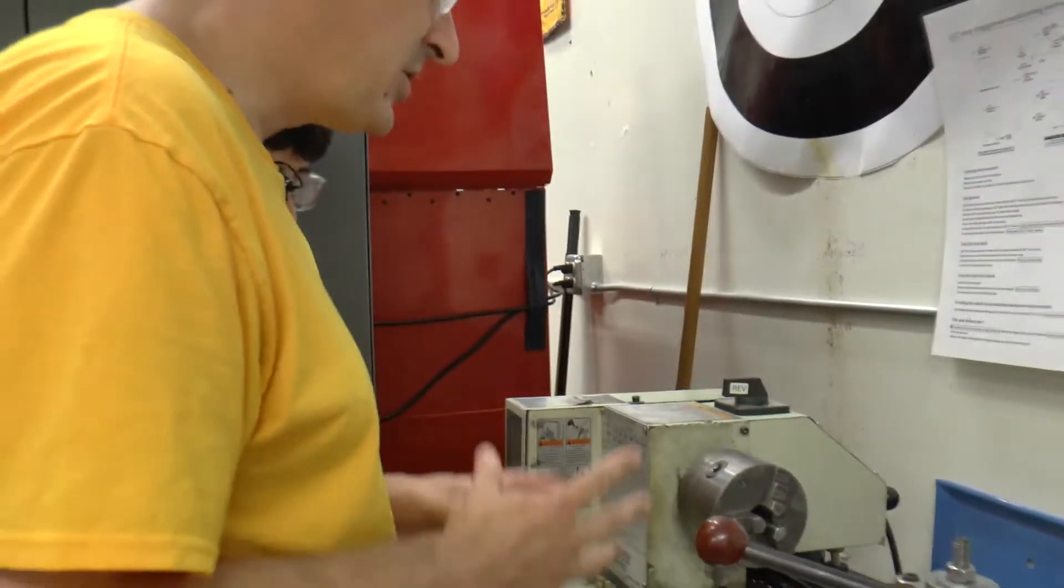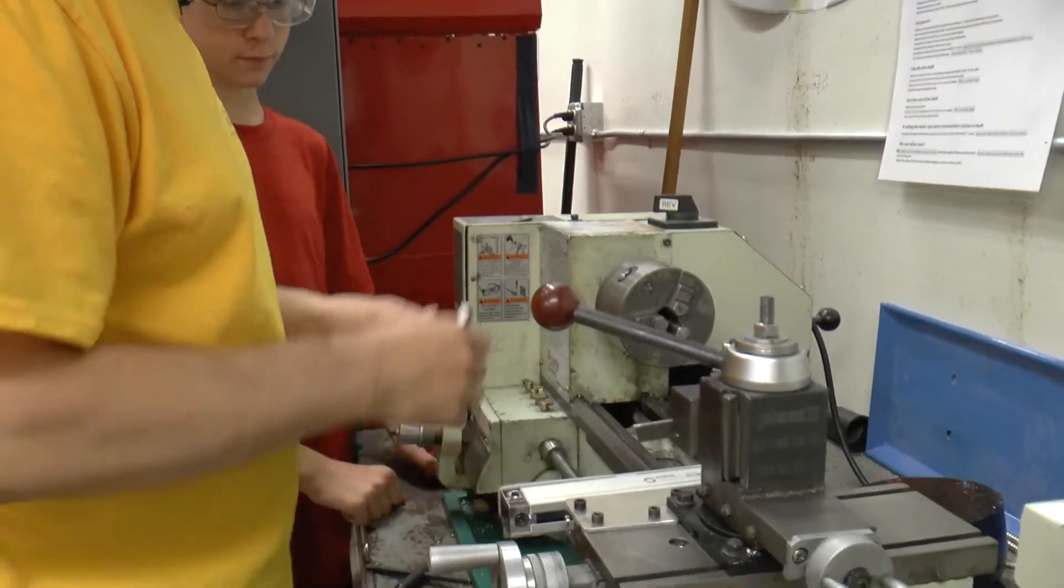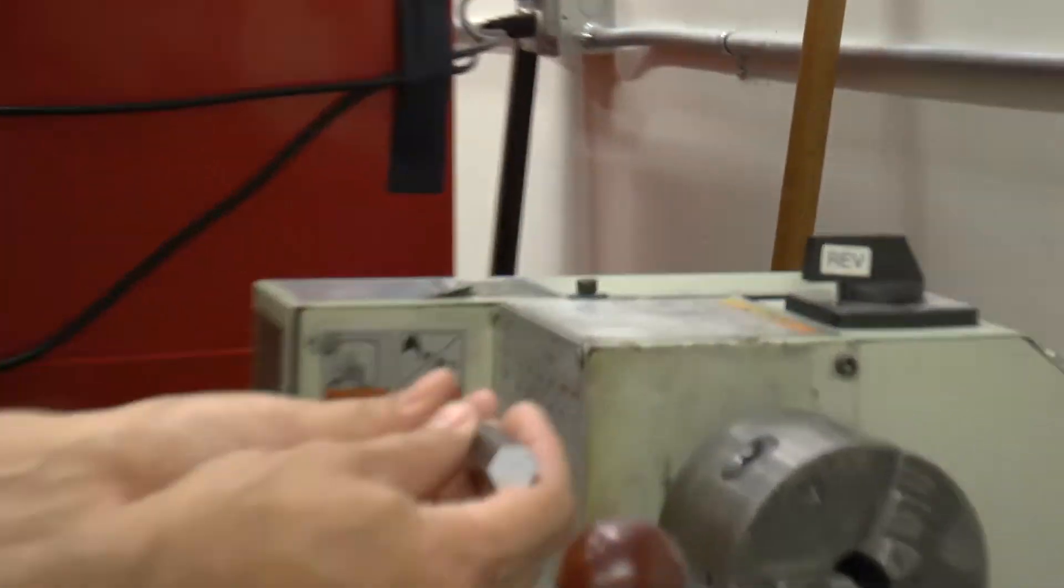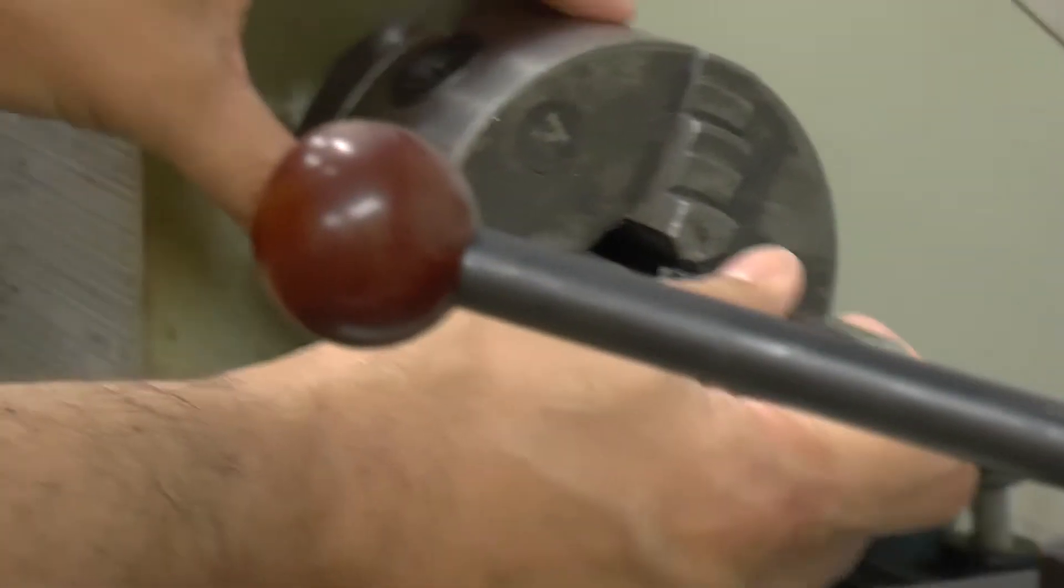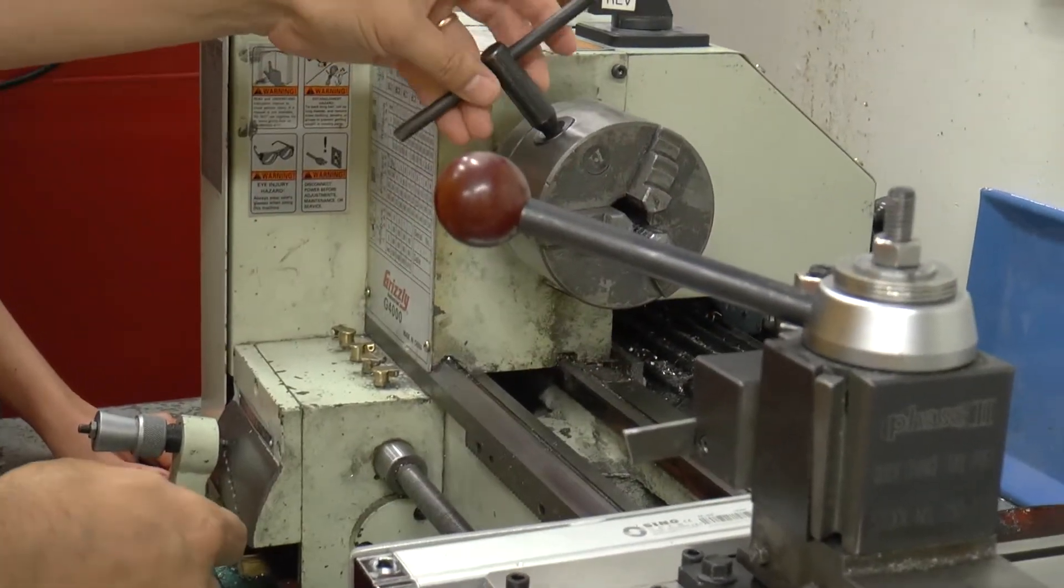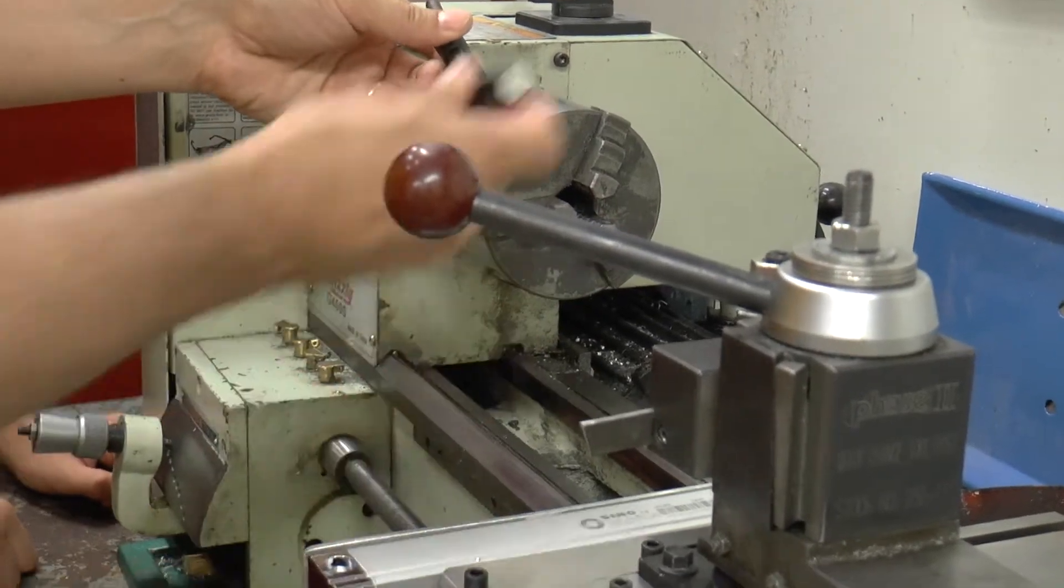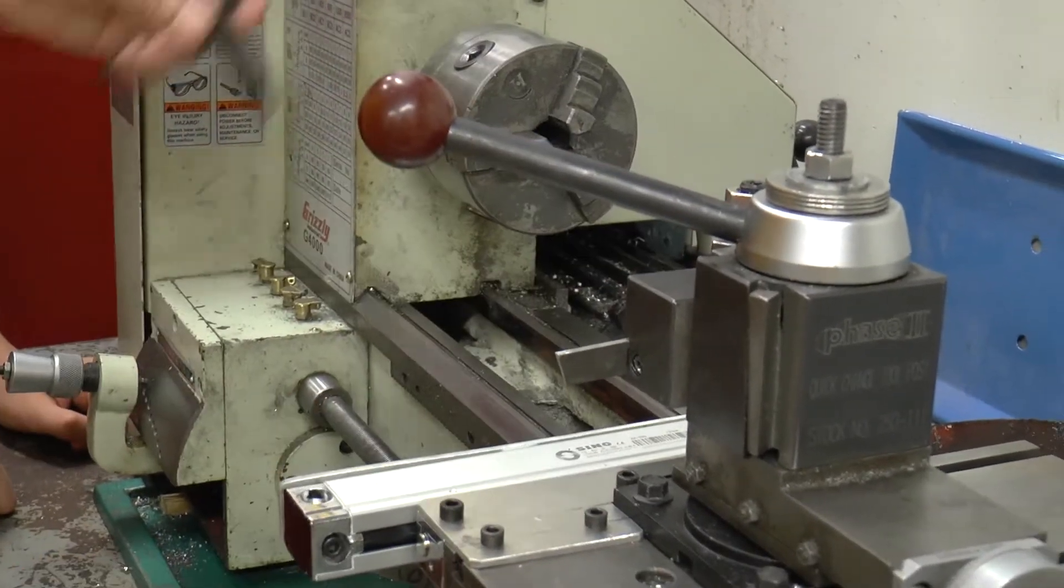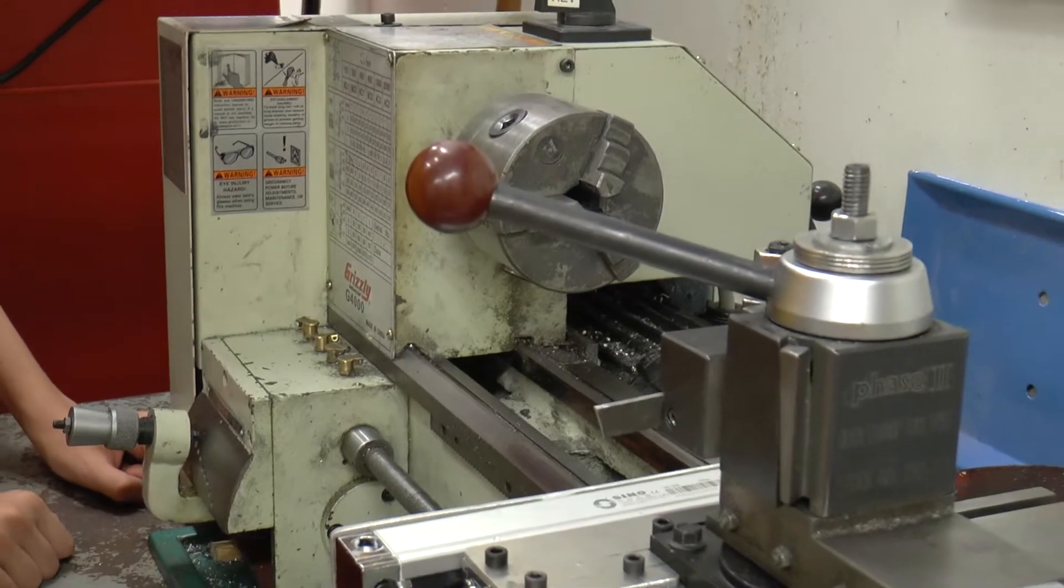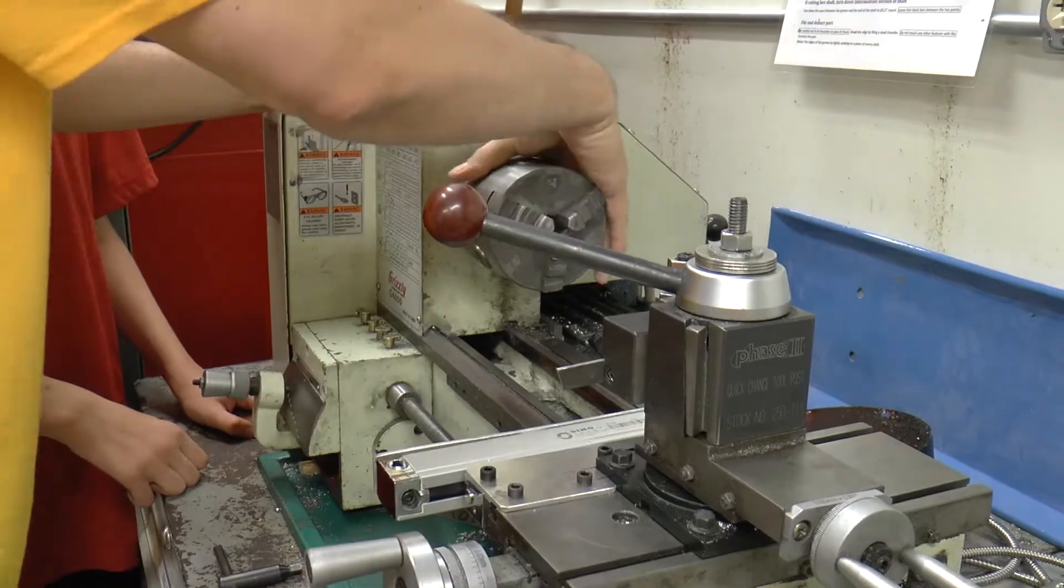This is a lathe, and what the lathe does is it lets you take a piece of stock and chuck it into this chuck, and you tighten down the jaws of the chuck with this key that's right here. See how when you turn that it opens and closes, and that'll clamp down on the piece that we want to cut, and then there is a motor that's mounted in this housing that we can turn on, and when you turn that on, this chuck will spin.